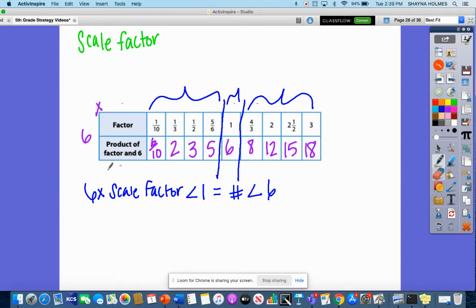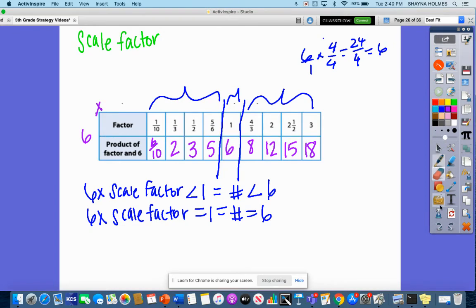So what about this part? If I do six times a scale factor equal to one, I end up getting a number that is equal to six. So even if I multiplied six times four over four, four over four is equal to one. I will still end up getting six because that would be 24 over four is equal to six. So no matter what I do, I'll get the same number I started with.